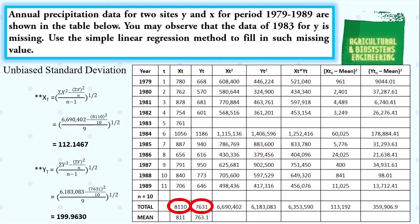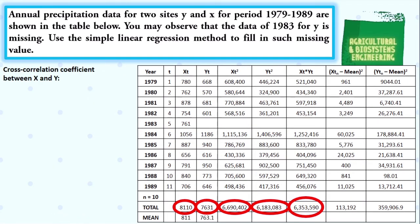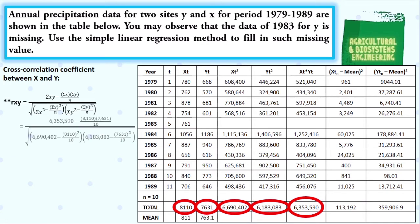After solving for the biased and unbiased standard deviations, we proceed with solving the cross-correlation coefficient between X and Y. To solve for its value, we will be needing this formula. The encircled values in the table are the values necessary to solve for Rxy. We substitute values and simply solve, giving us Rxy equal to 0.8168.